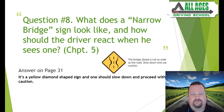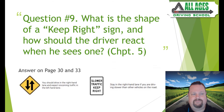Question number eight: what does a narrow bridge sign look like and how should the driver react when seeing one? It's a yellow diamond-shaped sign; one should slow down and proceed with caution when approaching a narrow bridge sign.